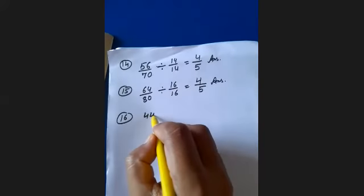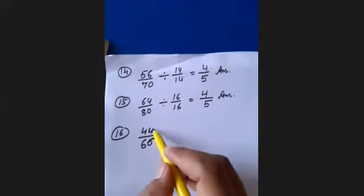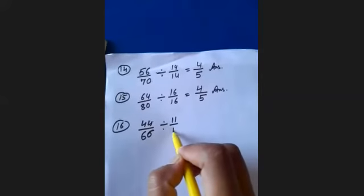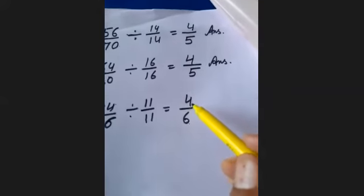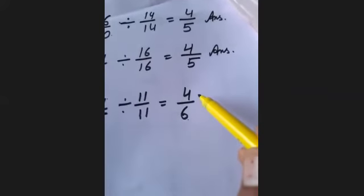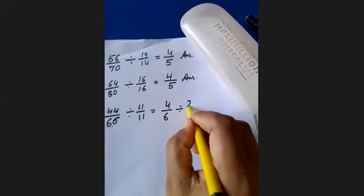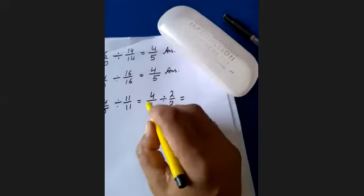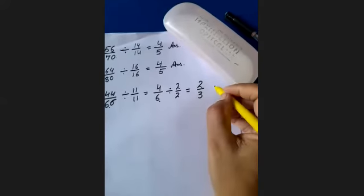Question 16: 44 upon 66. Both 44 and 66 are multiples of 11. Divide by 11: 44 divided by 11 is 4, and 66 divided by 11 is 6, giving 4 upon 6. But 4 and 6 are also multiples of 2, so divide again by 2: 4 divided by 2 is 2, and 6 divided by 2 is 3. Your answer is 2 upon 3.